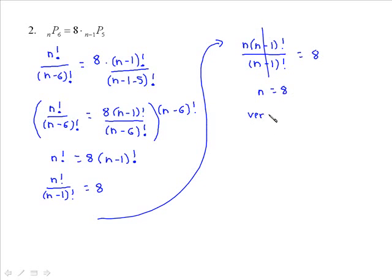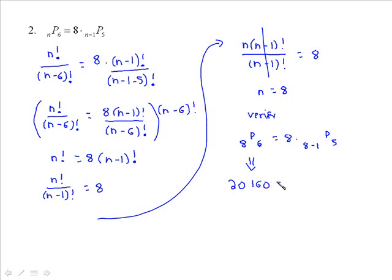If you wanted to verify: 8P6 should equal 8 times 7P5. Using your calculator's pic keys, 8P6 gives 20,160. Then 8 times 7P5 — key in 7P5 and multiply by 8 — and you get the same answer, 20,160. So it did work out.